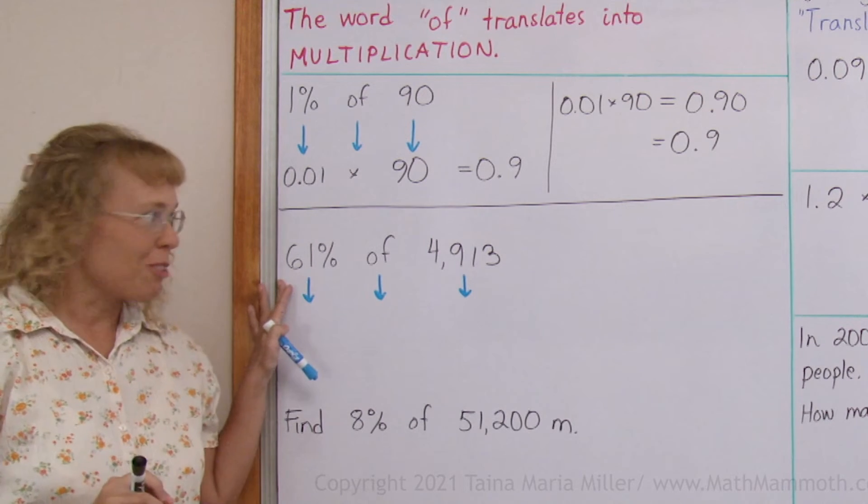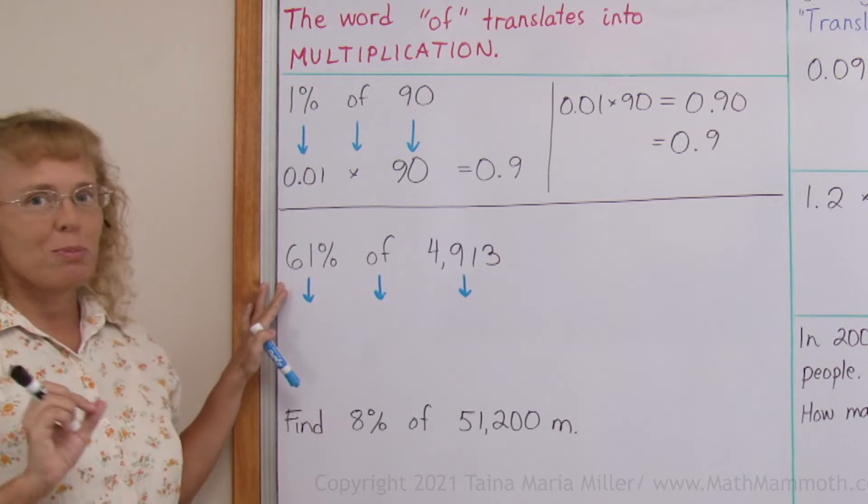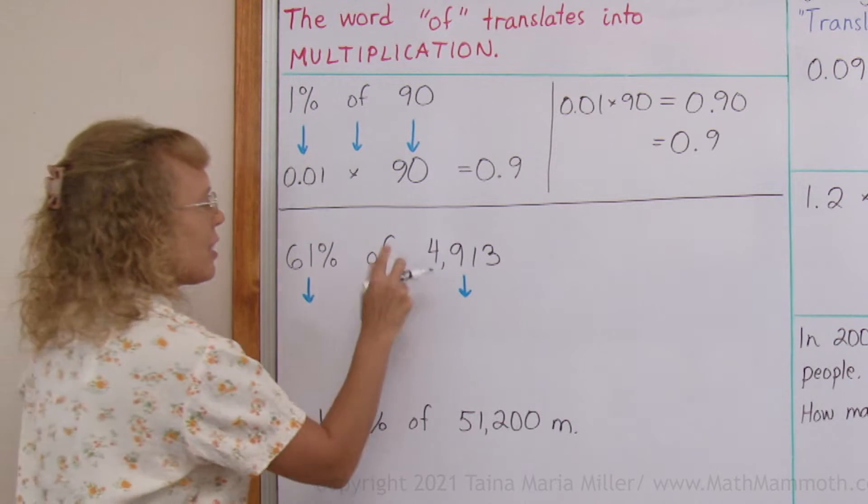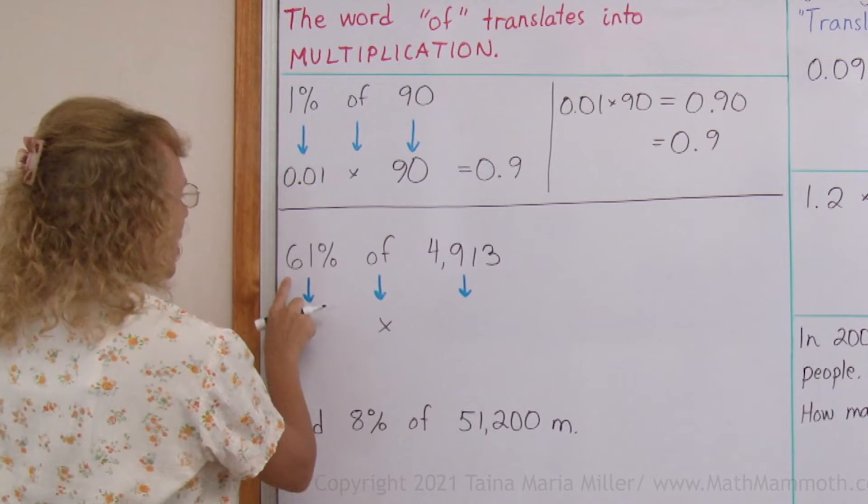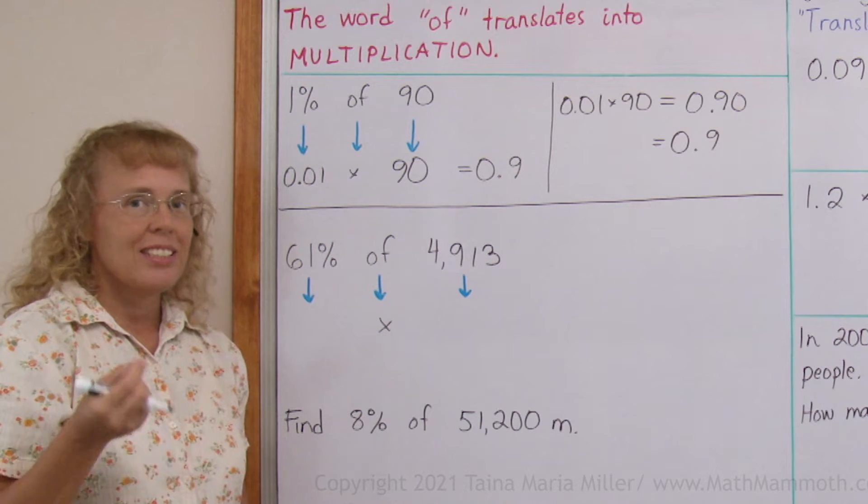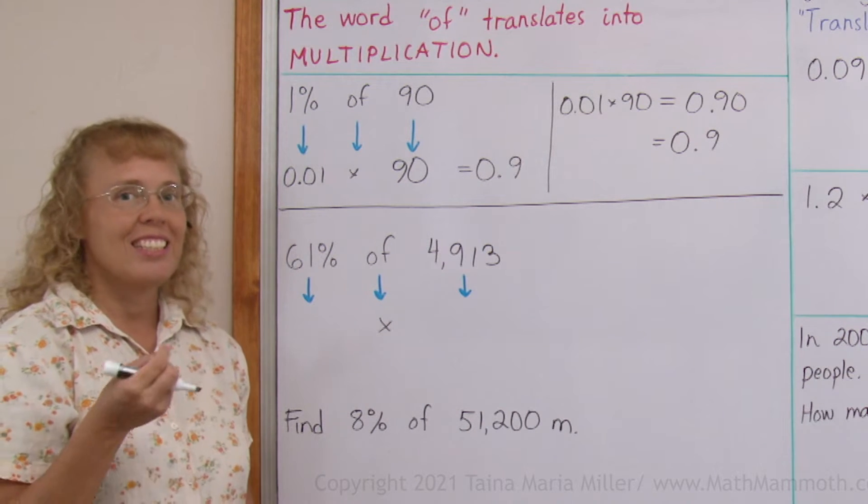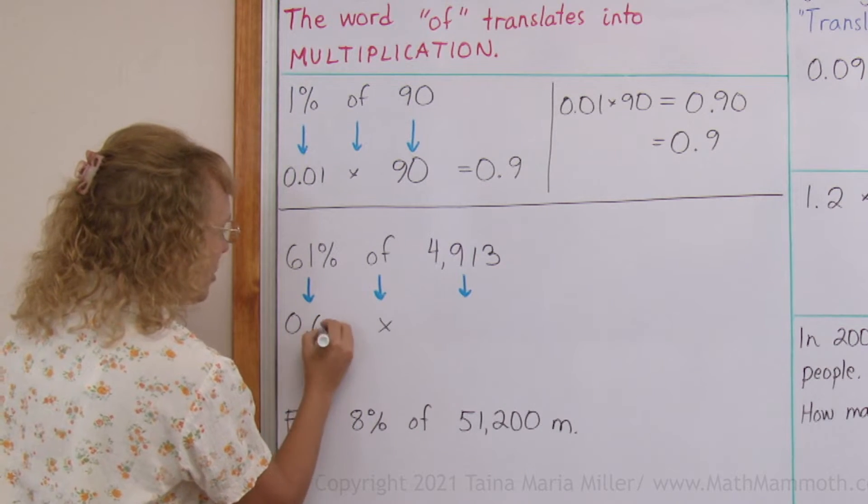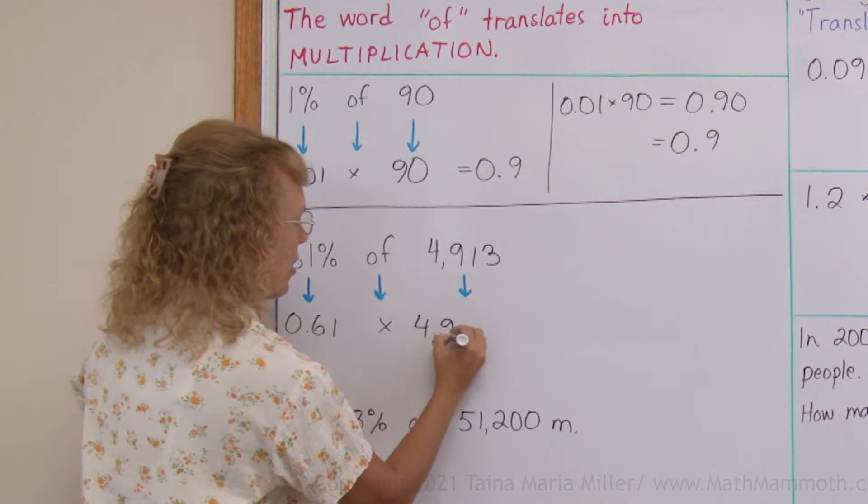Now here are some difficult looking numbers. So I want to use my calculator. For that I will think of this 'of' as multiplication and this I will change into a decimal. 61%, 61 per cent, 61 of a hundred, 61 hundredths, 0.61. This does not change.